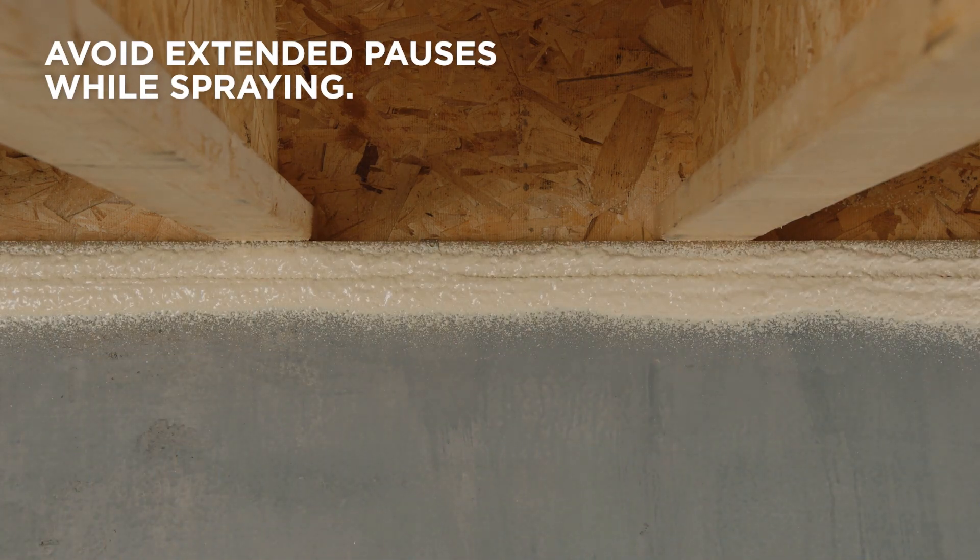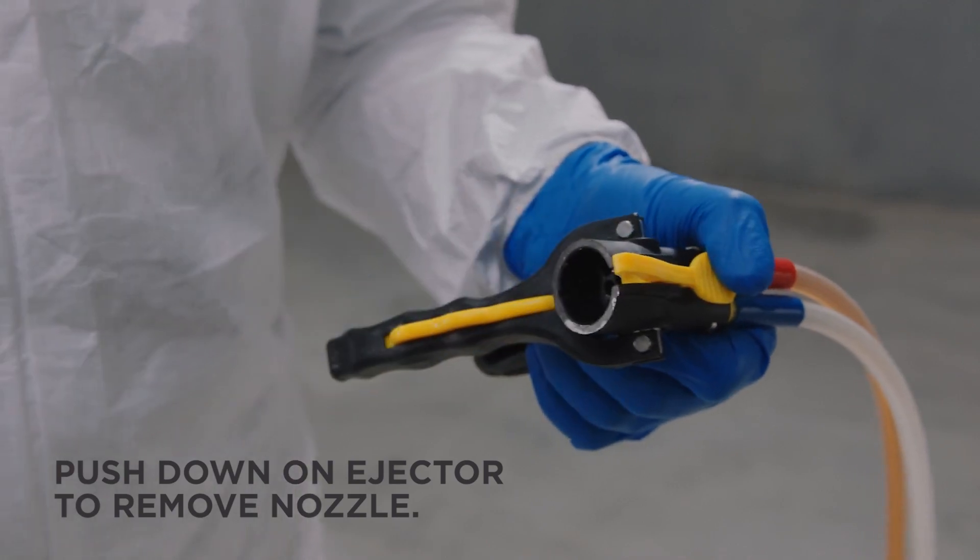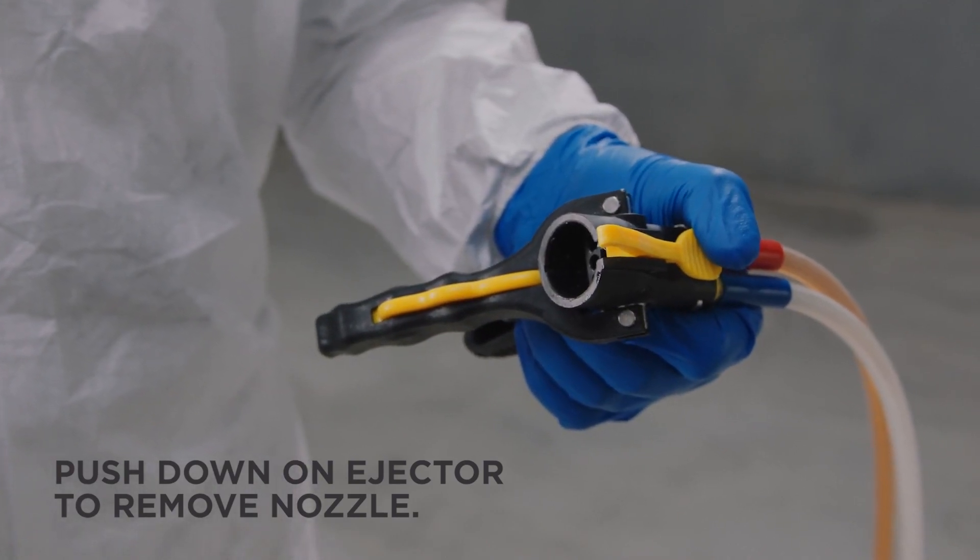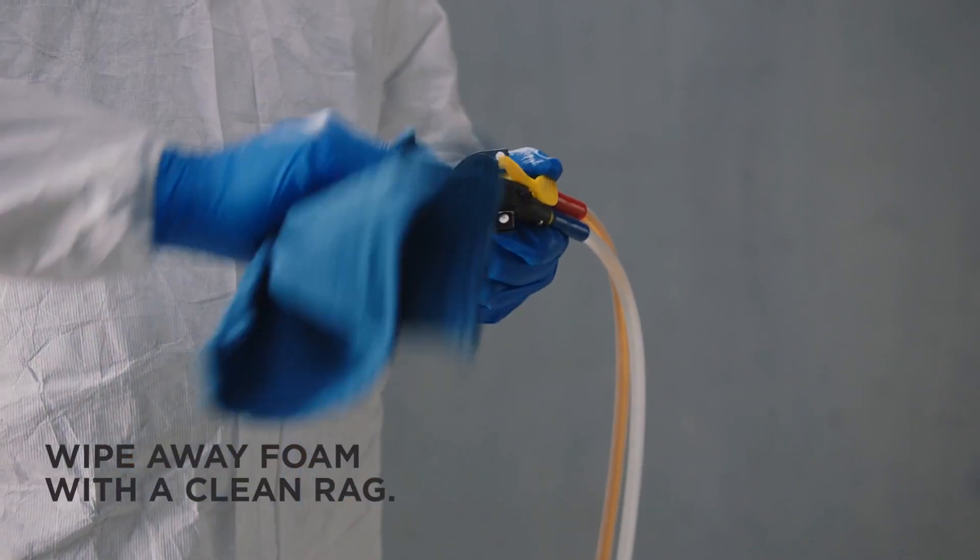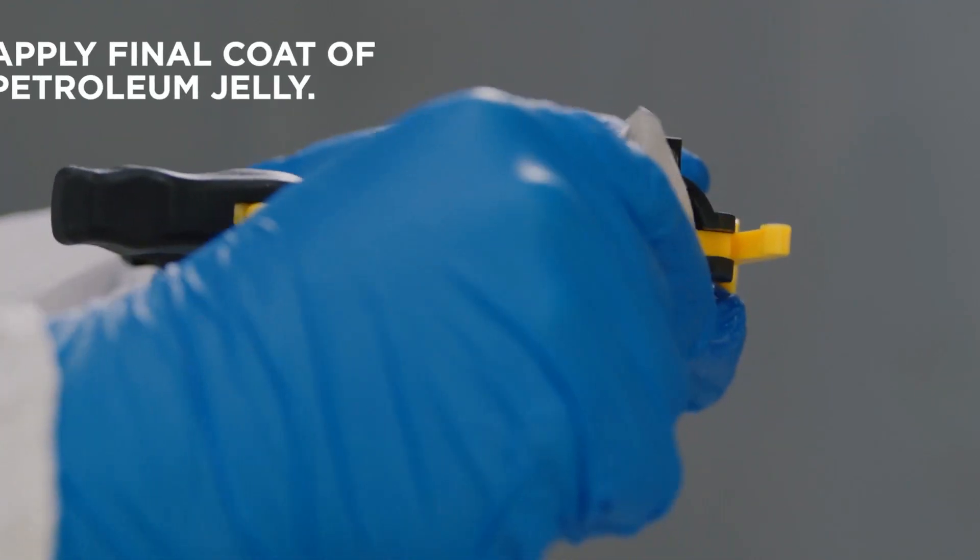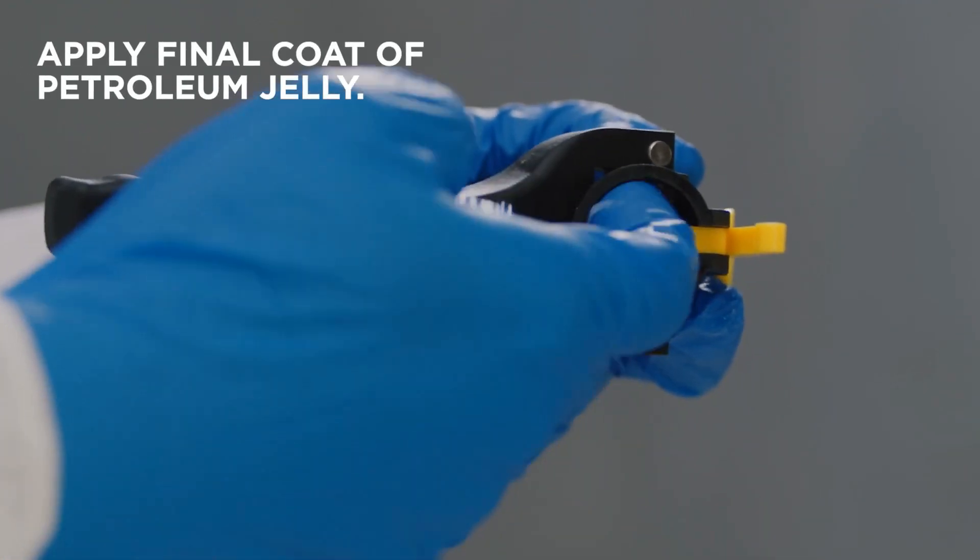Once spraying is complete, push down on the ejector to remove the nozzle. Next, clean the product from the dispenser face with a clean rag, then reapply one last coat of petroleum jelly and firmly reinsert the used nozzle.